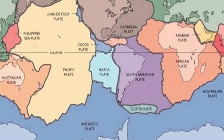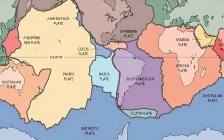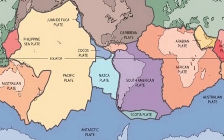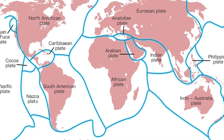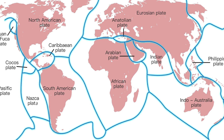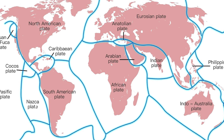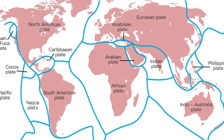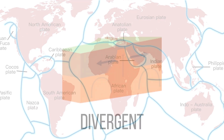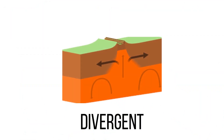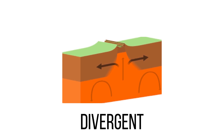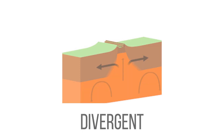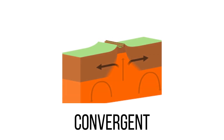Imagine Earth's lithosphere as a gigantic jigsaw puzzle. These puzzle pieces, known as tectonic plates, fit together like a massive interconnected network. These plates are not stationary but continuously moving. The movements of tectonic plates occur at three main types of plate boundaries: divergent, convergent, and transform.